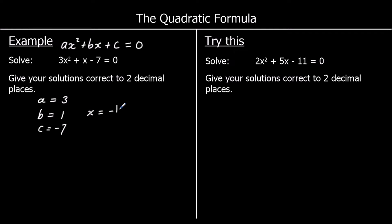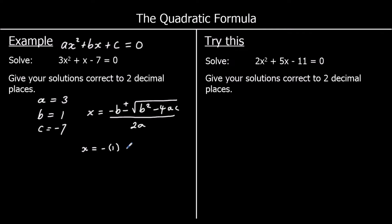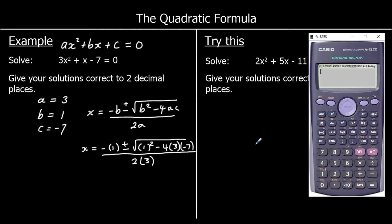So x equals minus b plus or minus the square root of b squared minus 4ac all over 2a. I'm going to change each of these letters for the number — substitute in — so we're going to have minus 1 plus or minus the square root of 1 squared minus 4 times 3 times negative 7, all over 2 times 3. With a plus or minus, that means we're going to have two different answers, so we're going to type into the calculator once with the plus and once with the minus.